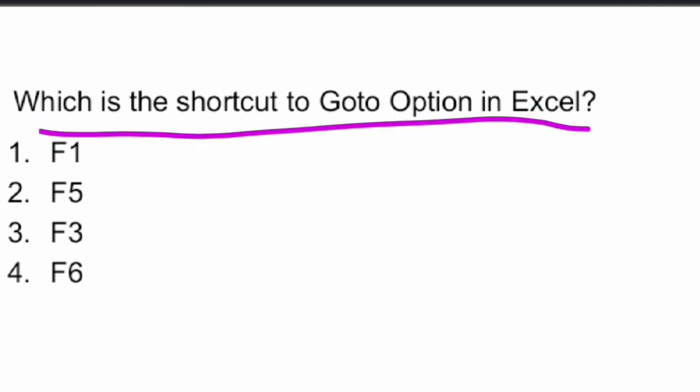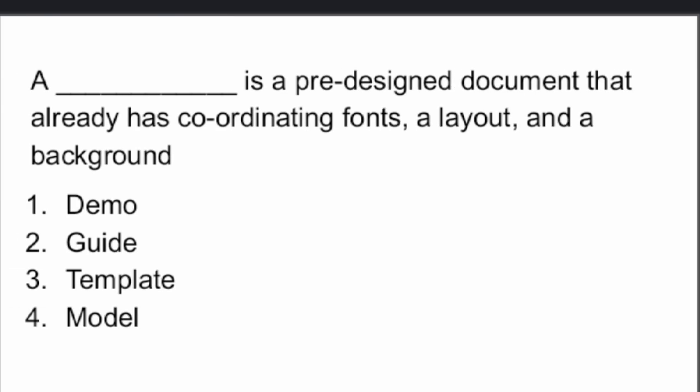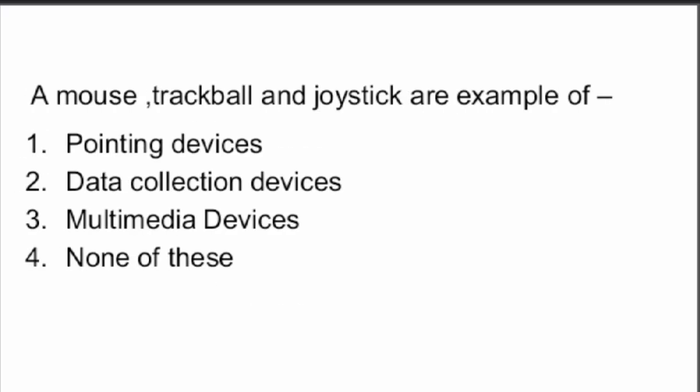What is the shortcut to go to an option in Excel? It is F5. These are the questions related to computer basics.